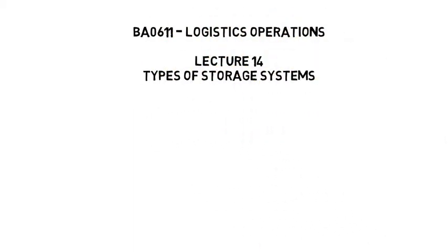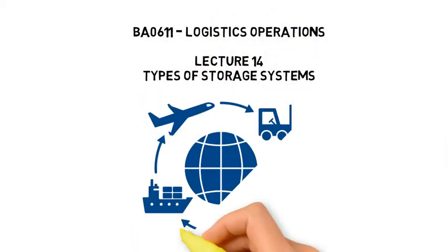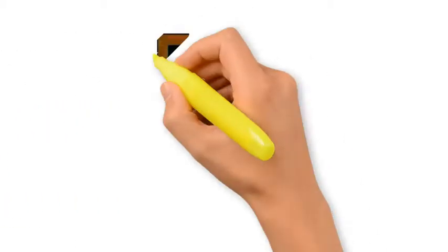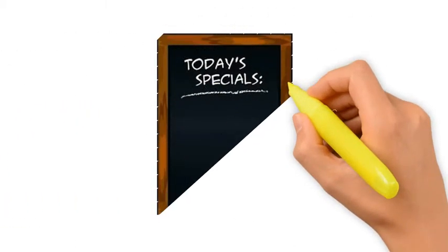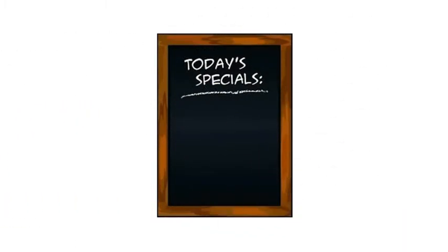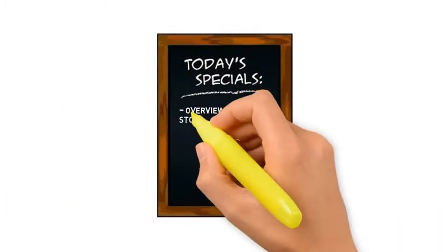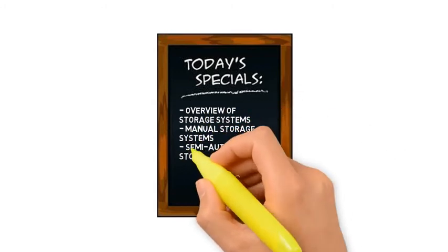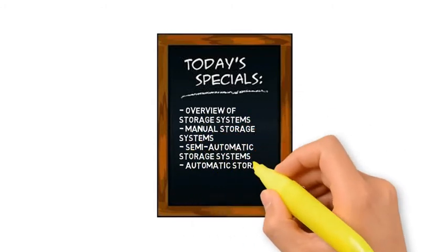Welcome to lecture 14. Today we will find out about different types of storage systems. In this lecture, we will first do an overview of storage systems and then examine the features of manual, semi-automatic and fully automatic storage systems.